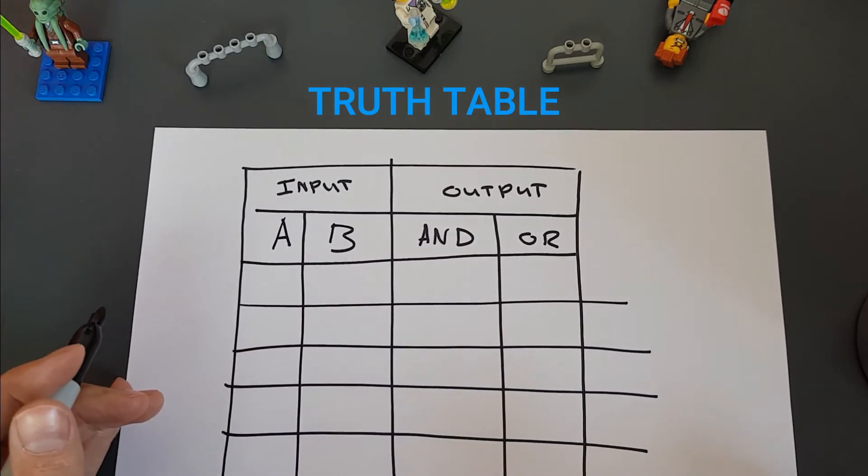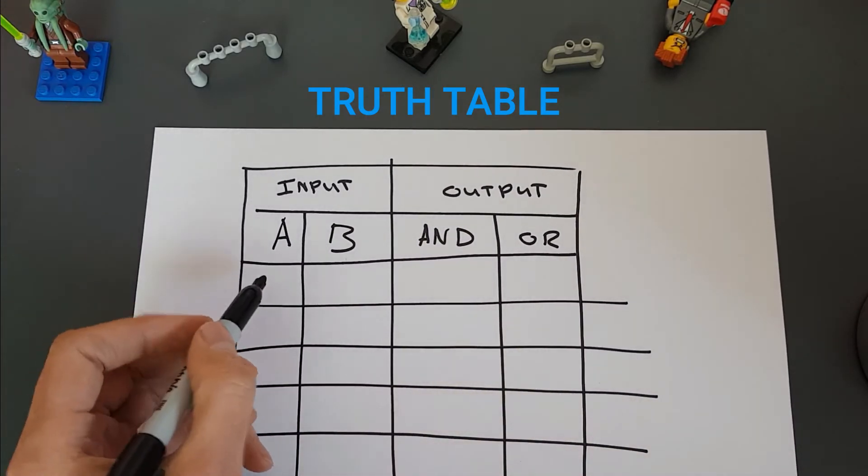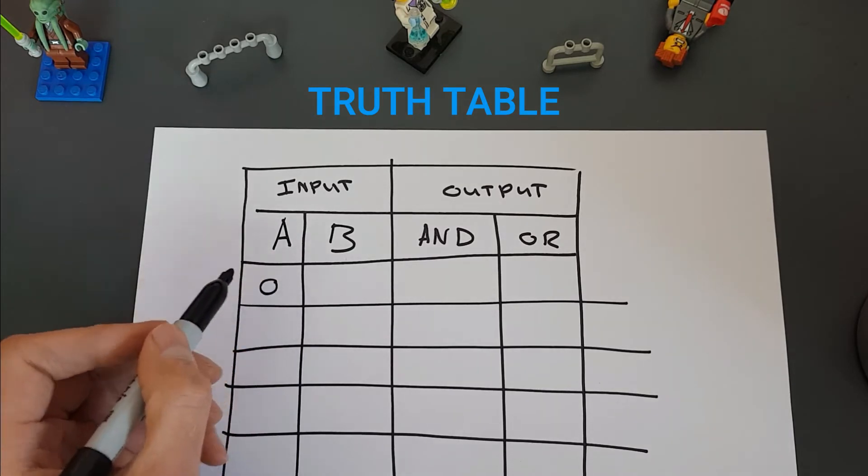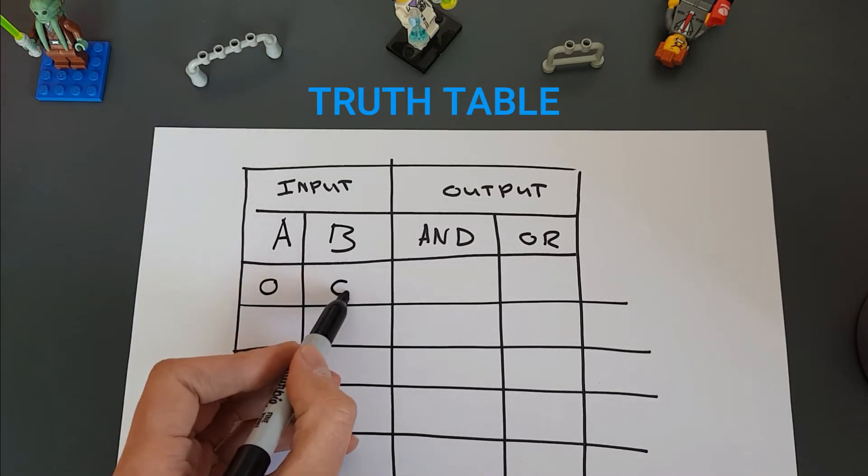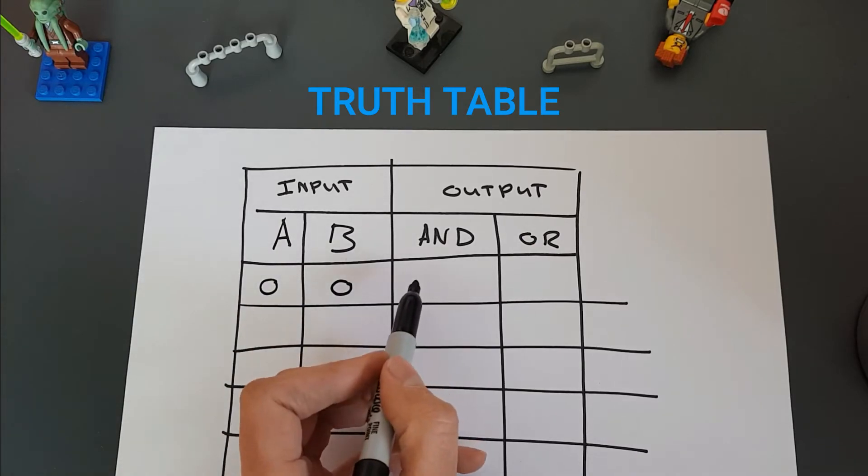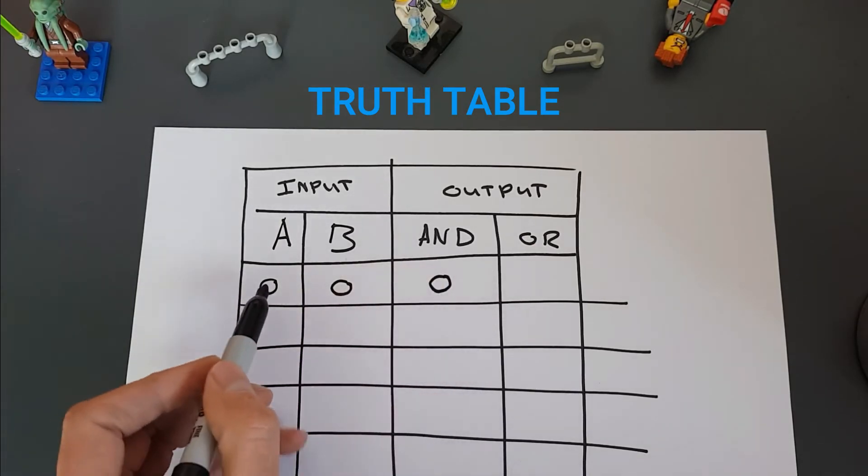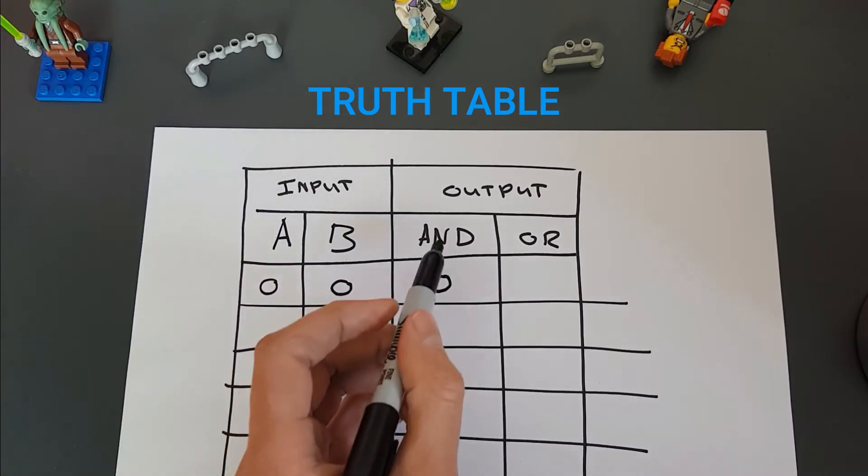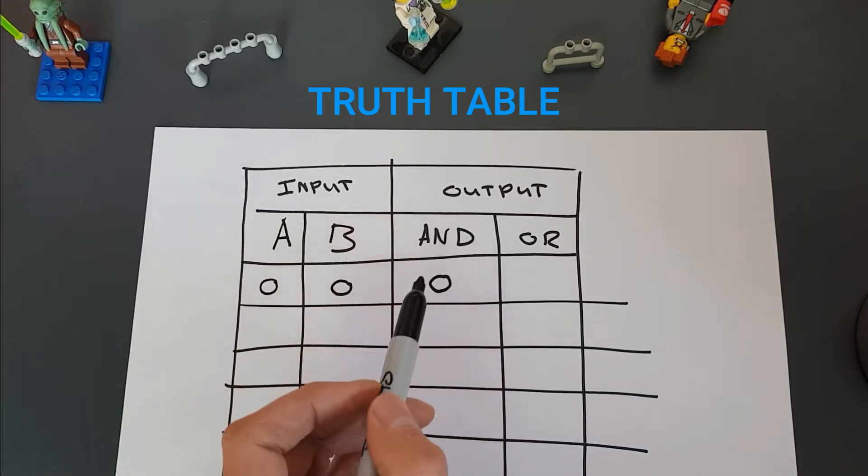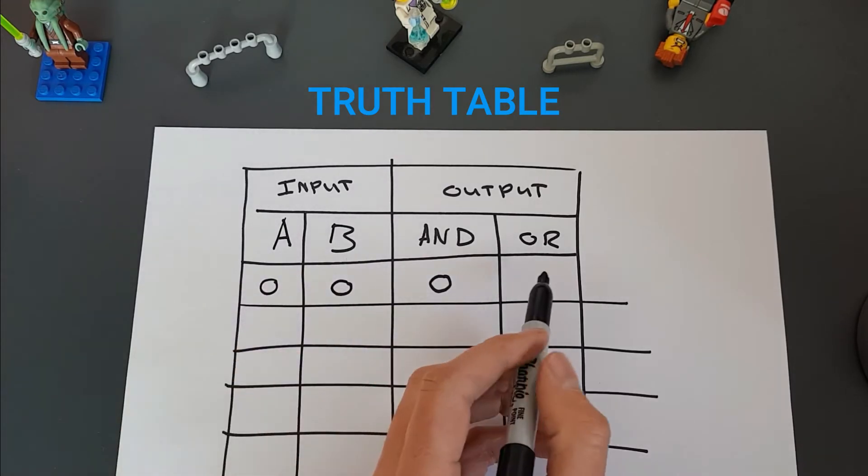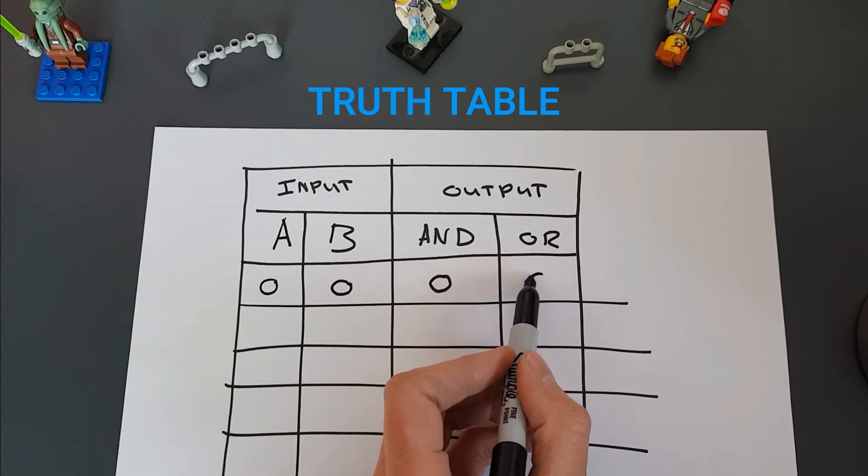So if A is 0 and B is 0, the AND output is going to be 0 because both of these need to be ON for AND gate to work. And if A and B are both 0 or FALSE, OR is also going to be FALSE.